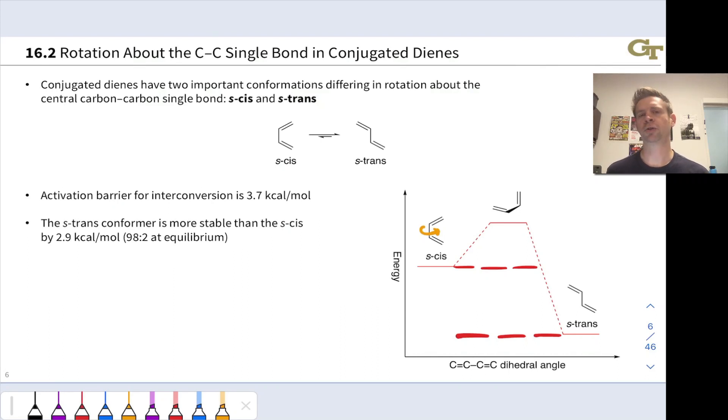Conjugated dienes are characterized by alternating double and single bonds. The single bonds in conjugated dienes have some interesting conformational aspects, which we're going to explore in this video.